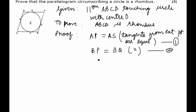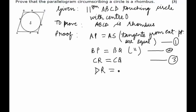Similarly, from point C we can say that CR equals CQ. Let's call this equation number three. And from point D we get that DR equals DS — tangents from external point D. Let's call this equation number four. So if we add equations 1, 2, 3, and 4,